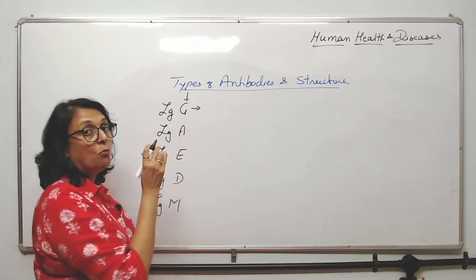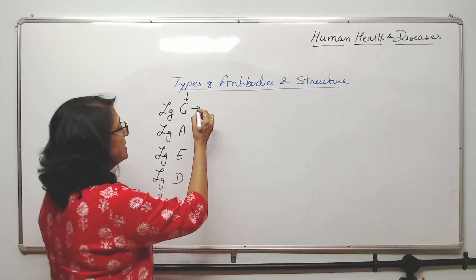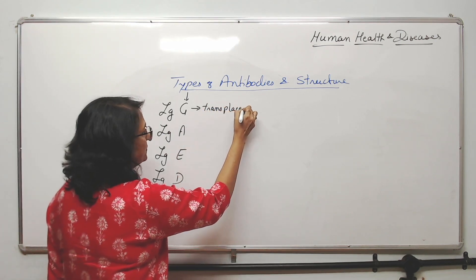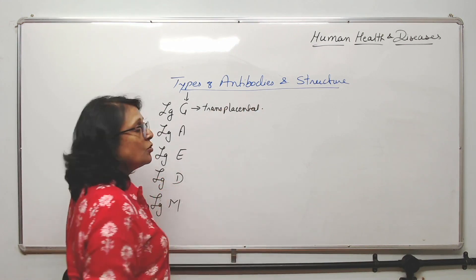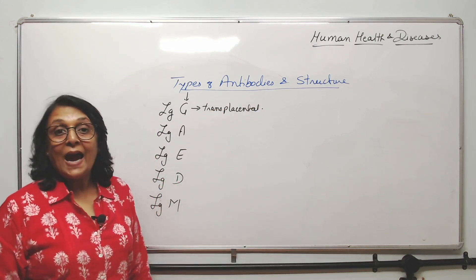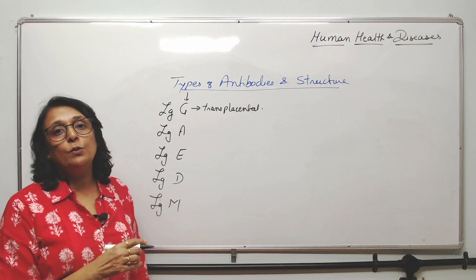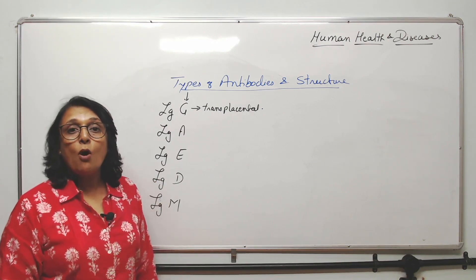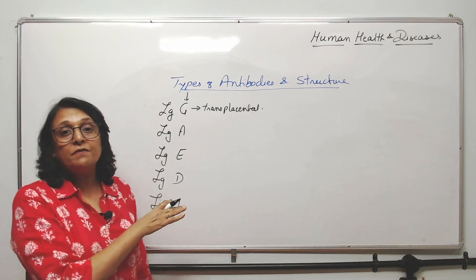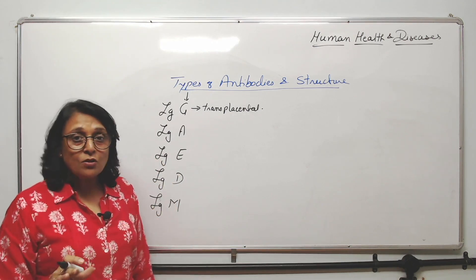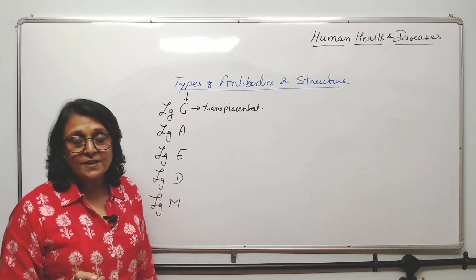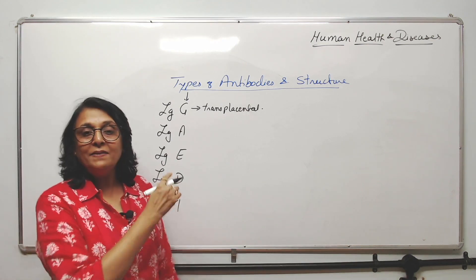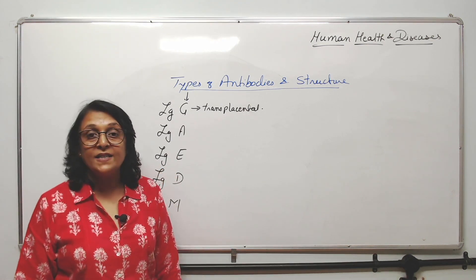IgG are the most abundant antibodies and they are transplacental — they can cross the placenta. This is the antibody given from mother to fetus, so babies are born with these. This is passive immunity; the babies did not synthesize these antibodies, the mother passed them on.